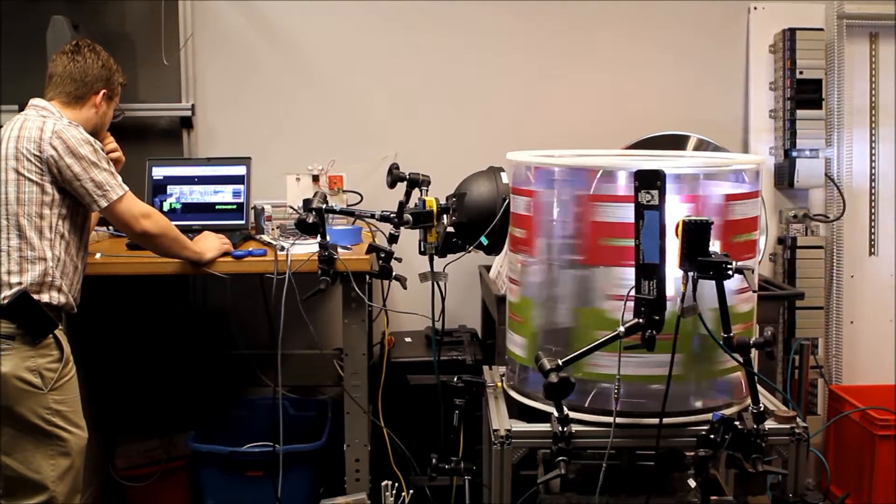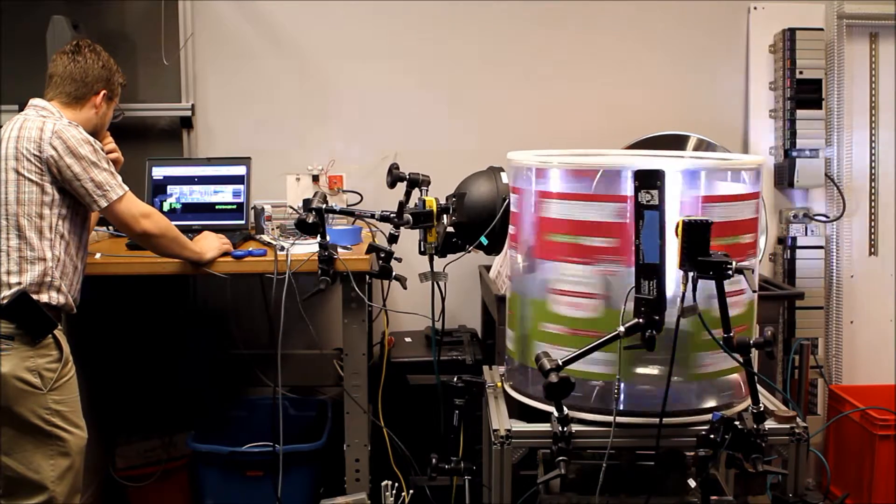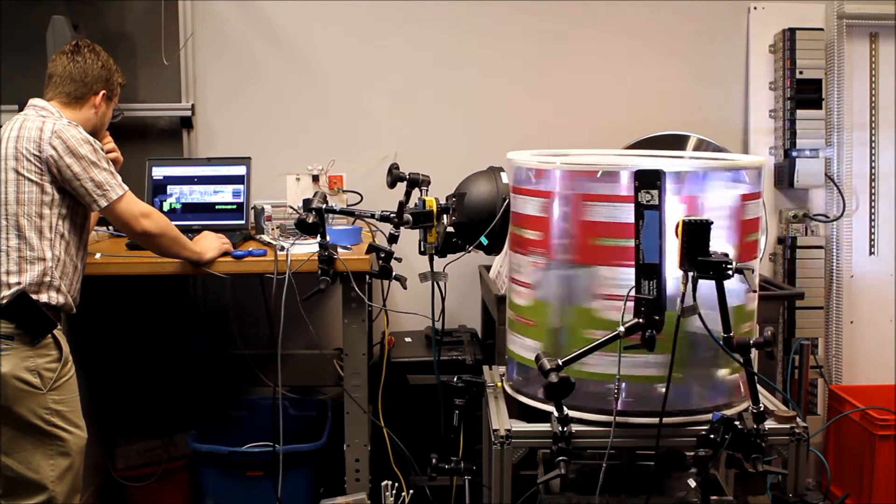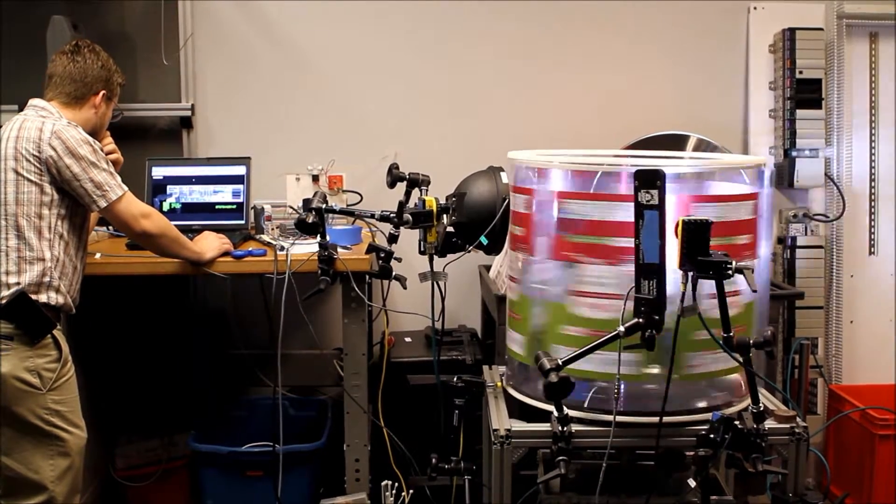This machine vision application shows two different methods commonly used for packaging inspections of artwork, barcode 2D matrix reading, expiration and date code verification, and for the reading and verification of allergen information on packaging.